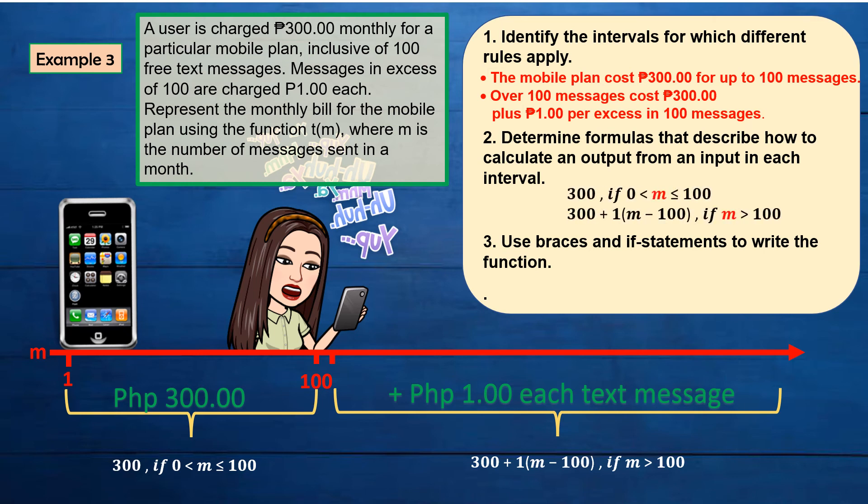To write the function T of M, we need to use braces and if-statements. It should be written this way: T of M equals P300 if 0 is less than M is less than or equal to 100, and P300 plus 1 times the quantity M minus 100 if M is greater than 100.